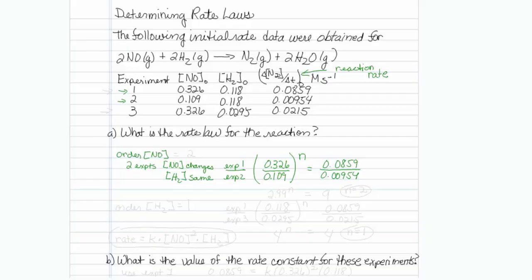So I will take 0.326 divided by 0.109 and I will get 2.99 to the Nth is equal to 0.0859 divided by 0.0054, which turns out to be 9. In this case then, N equals 2 because 3 squared is equal to 9.